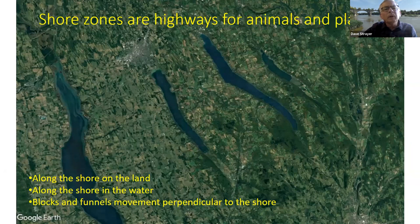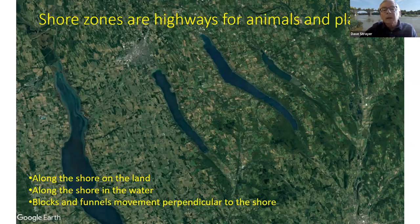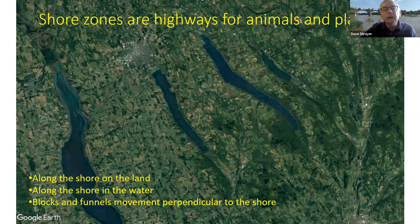Shore zones are also important travel corridors — highways for the movement of plants and animals. In the Finger Lakes area, many lakes are oriented north-south, and there's a lot of movement of migratory birds along their shores. The shores of lakes and rivers are highways for movement of terrestrial animals on the land side, and corridors for aquatic animals like fish on the wet side of the shore zone.